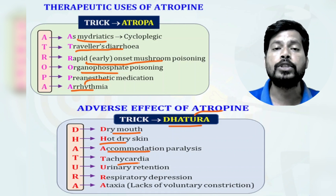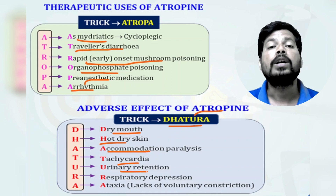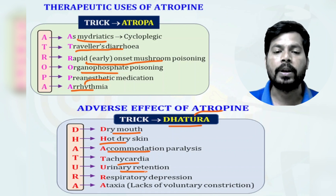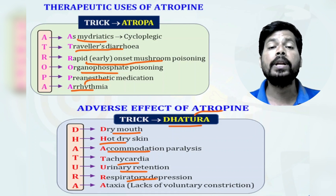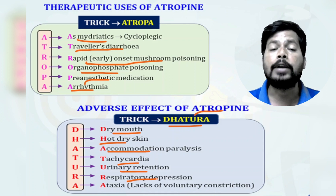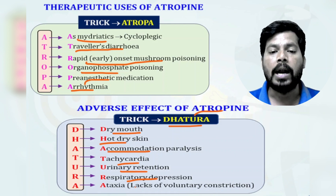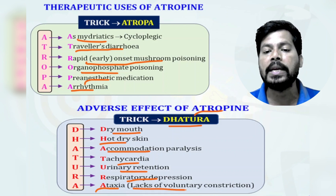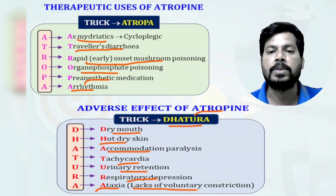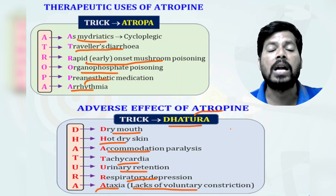Further adverse effects include retention of urine — since acetylcholine promotes diuresis, atropine causes urinary retention. Respiratory depression can also occur because atropine relaxes bronchial smooth muscle, unlike acetylcholine which increases lung muscle contractions to help respiration. Atropine also causes ataxia — a lack of voluntary muscle coordination — which affects muscle movements.